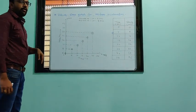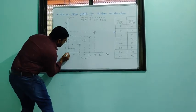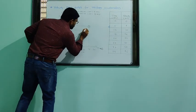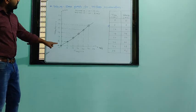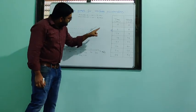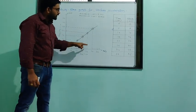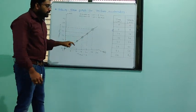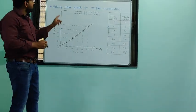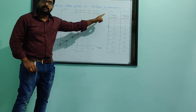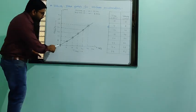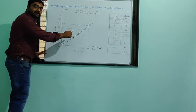If you draw all points on the graph and join each point, you will find all points are on one straight line. So the velocity-time graph for uniform acceleration is a straight line graph.